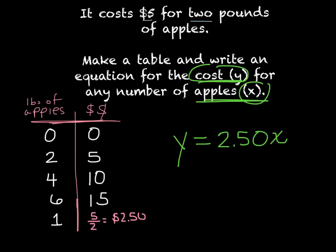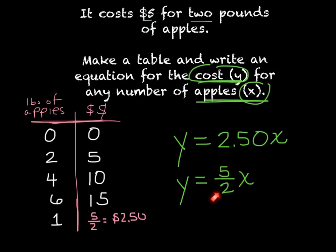Another way to write this is y equals 5/2 times x. This 5/2 is actually the unit rate — how much it costs for just one apple. It's $5 for two apples, so I divide that to get how much it is per apple.